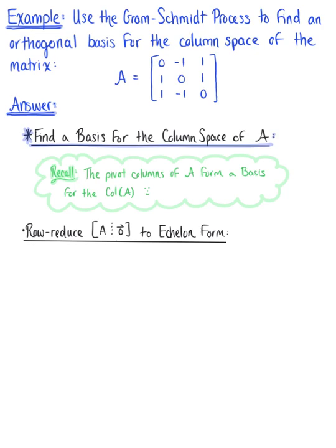Here is our matrix A. The first column is 0, 1, 1; the second column is negative 1, 0, negative 1; and the third column is 1, 1, 0. Looking at the first pivot position, we see it is a 0 and we want a 1, so we interchange the first row with the second row to get a 1 in the first pivot position.